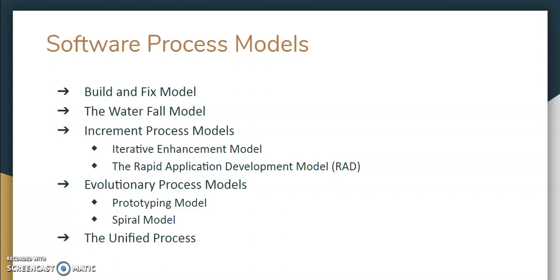These are the common or more popular software process models: the Build and Fix Model, Waterfall Model, Increment Process Model, Evolutionary Process Model, and the Unified Process Model. In the coming sessions, we will see each of these models in detail.